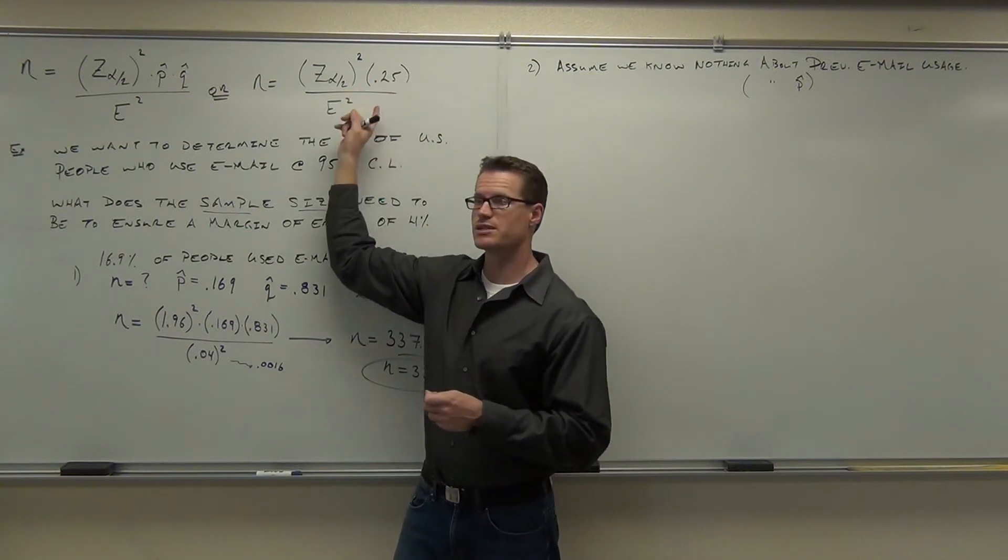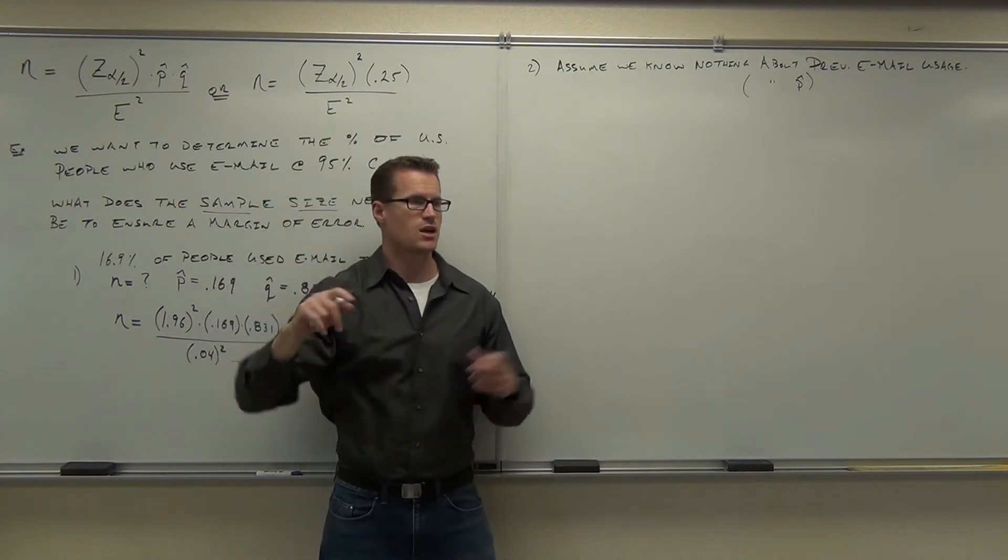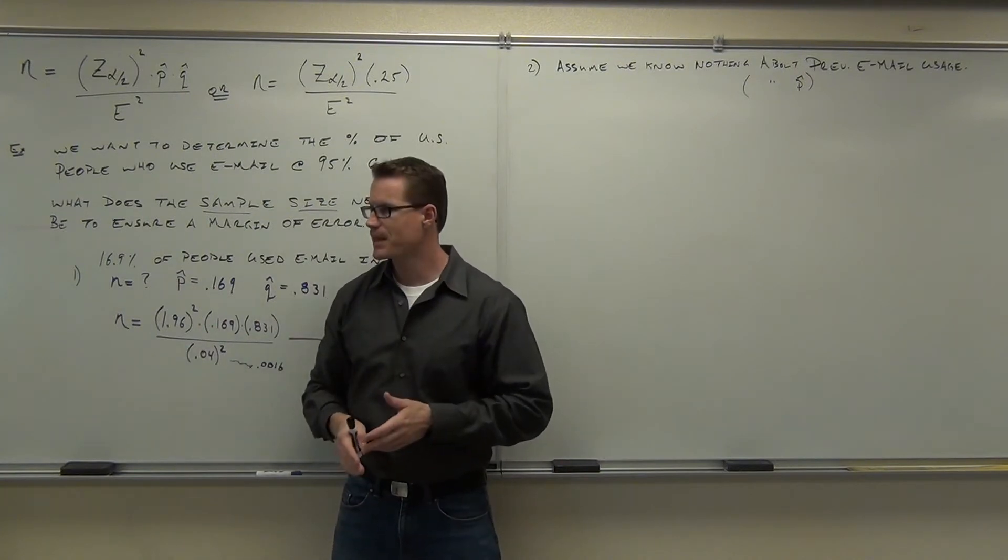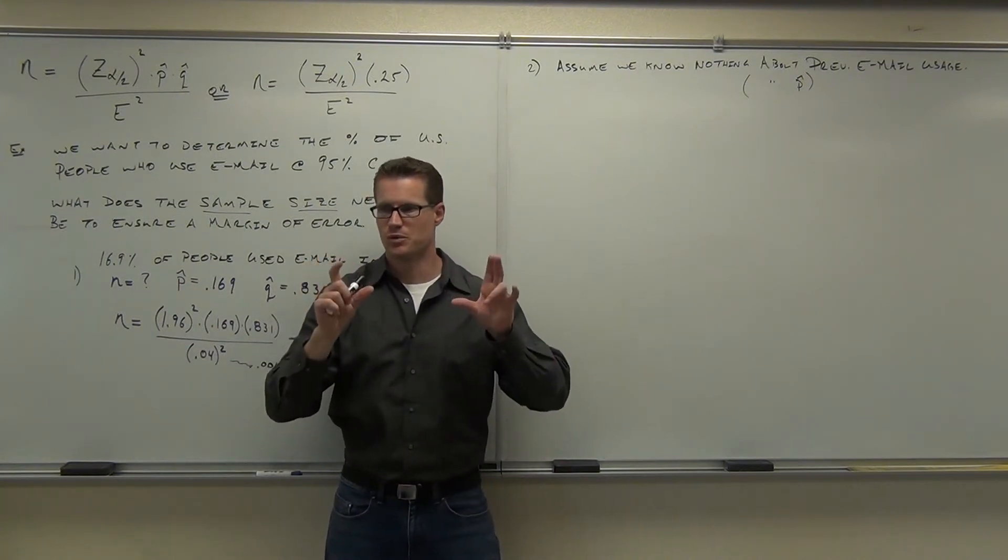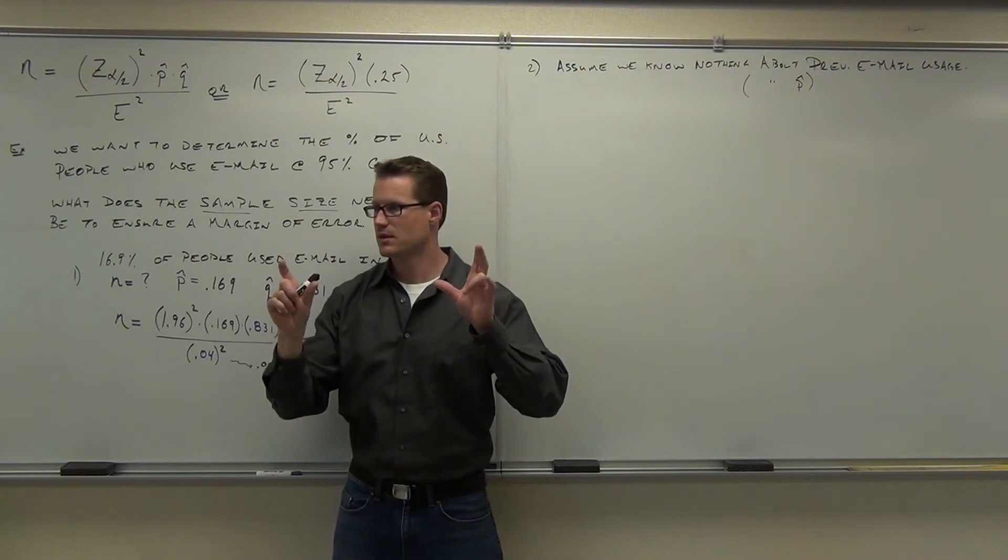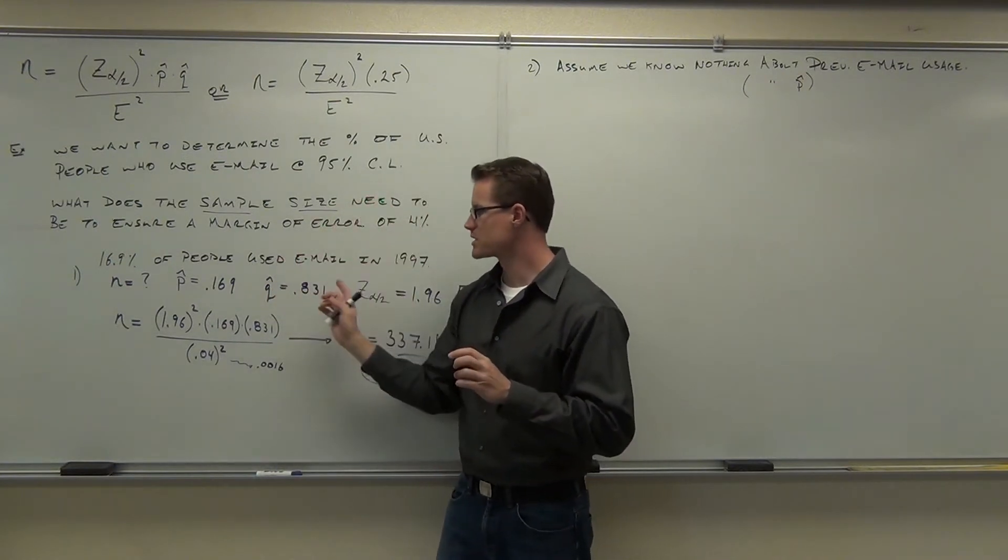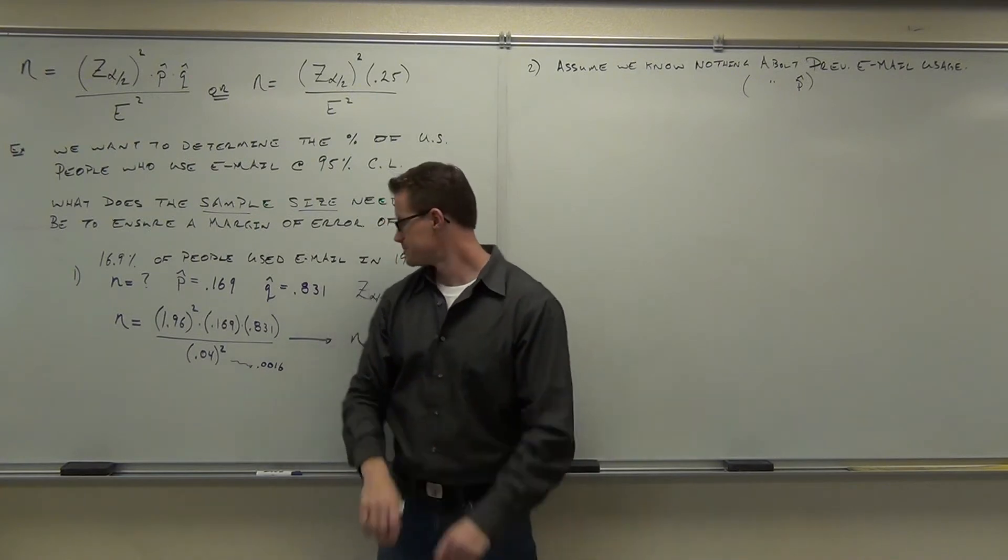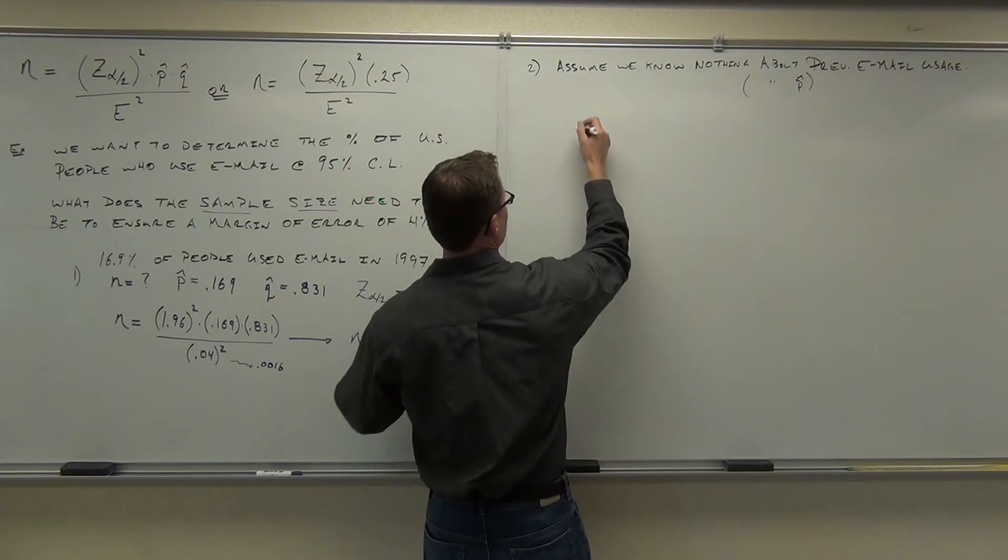Why? Because this is the worst-case scenario. This scenario says if I know nothing about p-hat, I have to assume it's 50-50. Know nothing about q-hat, assume it's 50-50. That's going to give you the largest possible decimal. If you multiply any two decimals together besides 0.5 and 0.5, you're going to get something less than 0.25.